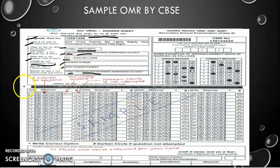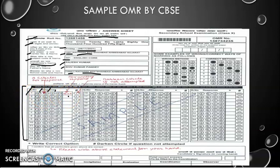Coming to the main section of the OMR sheet, if you see it clearly we have seven columns here. The first column shows the question number, then four options, then an extra box if you have incorrectly darkened the circles, and then an extra box if the question is not attempted — meaning you have to mark the ones you have not attempted. Let us see very carefully.